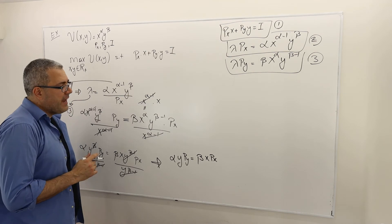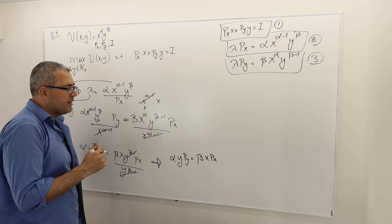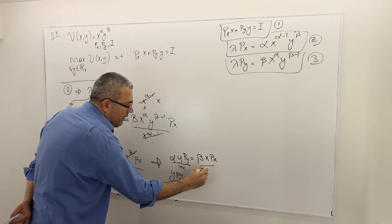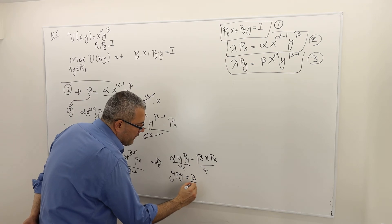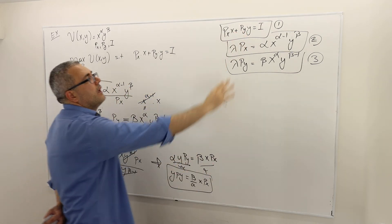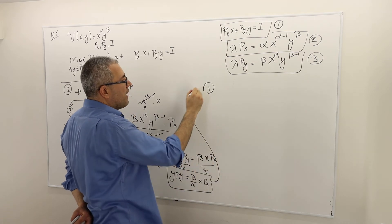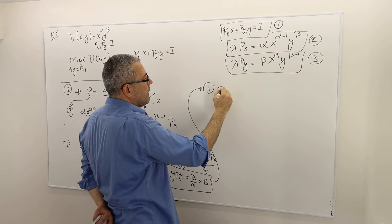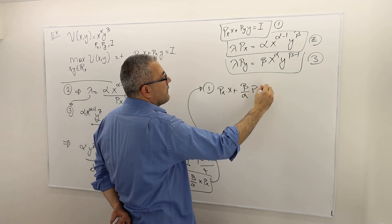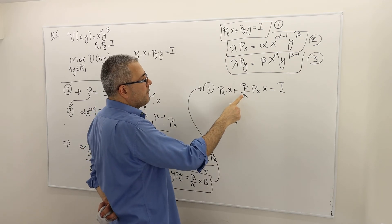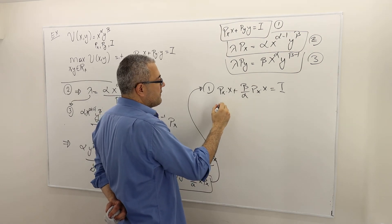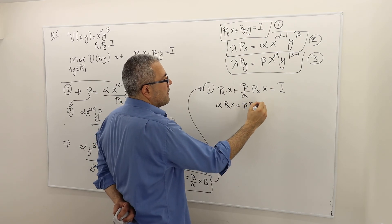Now I use equation 1. First, dividing both sides by alpha gives: y*py = (beta/alpha) * x*px. I plug this into equation 1: px*x + (beta/alpha)*px*x = income. Multiplying through by alpha: alpha*px*x + beta*px*x = alpha*income. Factoring: px*x*(alpha + beta) = alpha*income.